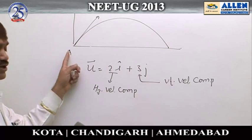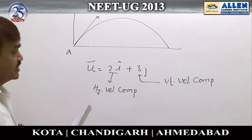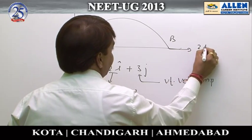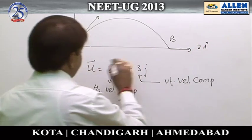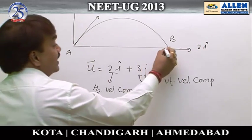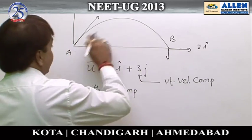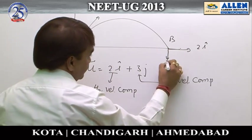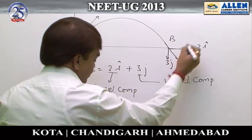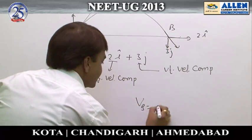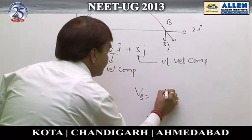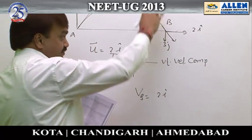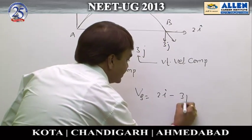In projectile motion, horizontal velocity remains constant, so at point B the horizontal velocity is also 2i-cap. However, the vertical velocity changes due to acceleration due to gravity, and at the final stage the vertical velocity reverses. So the final velocity at point B is 2i-cap (positive x-direction) minus 3j-cap (negative y-direction). The answer is option 4.